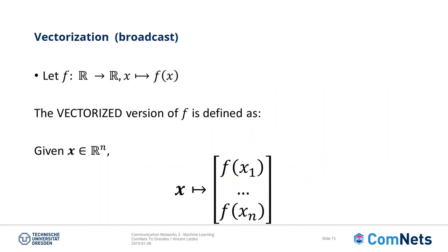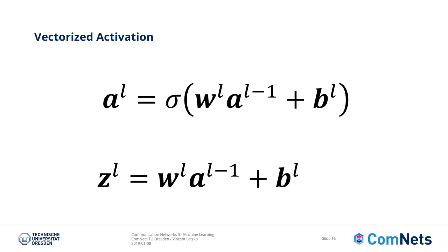For vectorization, a function f from R to R is applied element-wise to a vector x in R^n — the vectorized version calls the function n times for each element of the n-dimensional vector. For simplicity we introduce z^l, which is just the argument to the non-linearity, so a^l equals sigma of z^l.